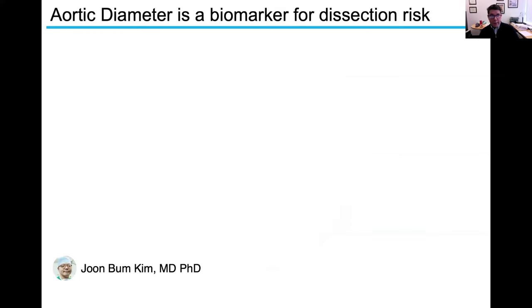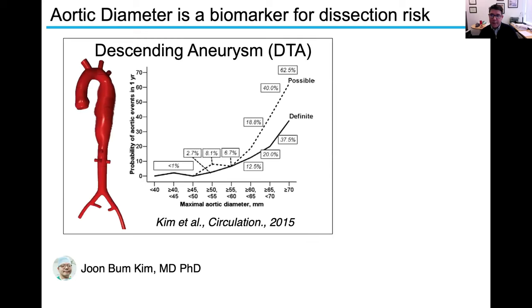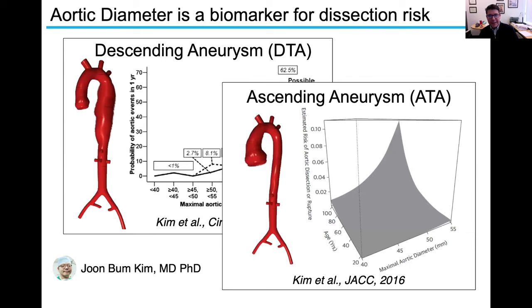We know that aortic diameter is, as of yet, our best biomarker for aortic dissection risk — and that's true whether you're in the descending thoracic aorta, this is the work of Jun Boon Kim, or ascending aortic aneurysm. Really, your risk of aortic dissection or aortic failure is proportional to the aortic diameter.